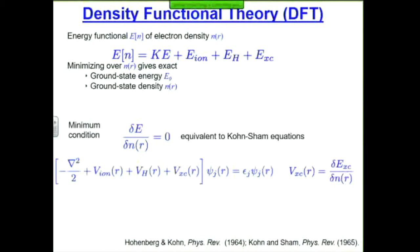Minimizing the energy functional turns out to be equivalent to solving self-consistent Schrödinger equations called the Kohn-Sham equations. This is an eigenvalue equation from standard quantum mechanics. There are Laplacians for kinetic energy, some potentials, a wave function, an energy, and a wave function. This VXC term is the derivative of something called EXC, which is the hard-to-know part. If you know that, you can solve this equation and get your wave function ψ_j and their energy ε_j.